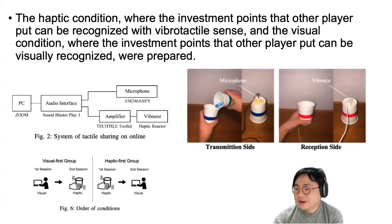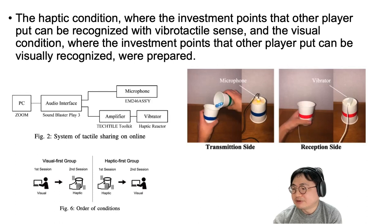In our experiment, we prepared two conditions: the haptic condition, where the investment points that other players put can be recognized with bipro-tactile sense, and the visual condition, where the investment points that other players put can be visually recognized.